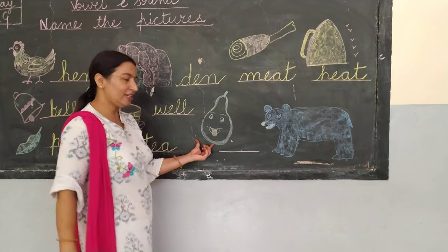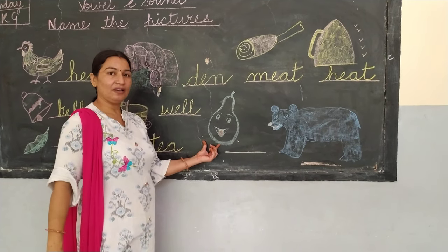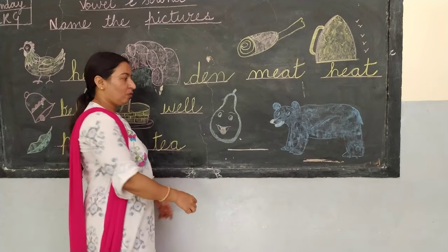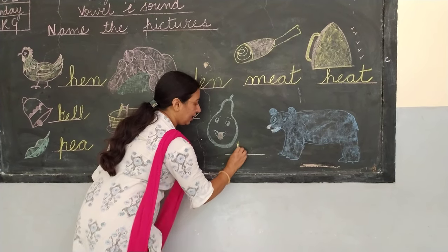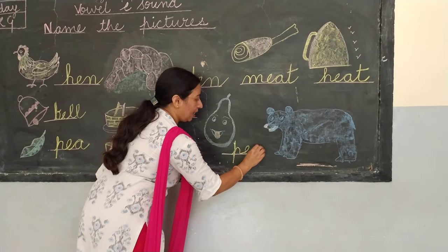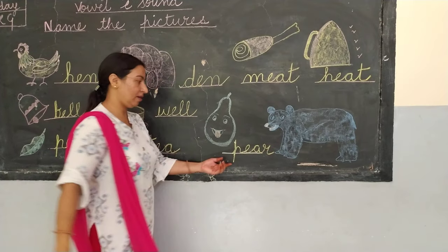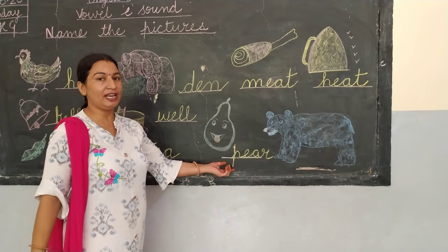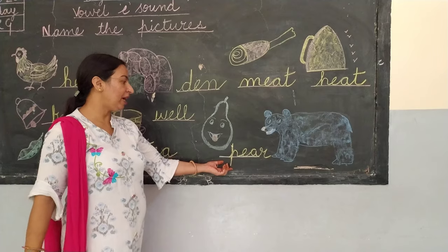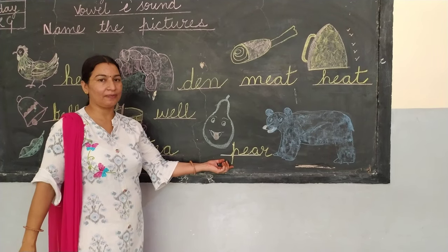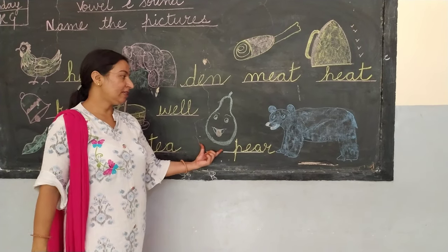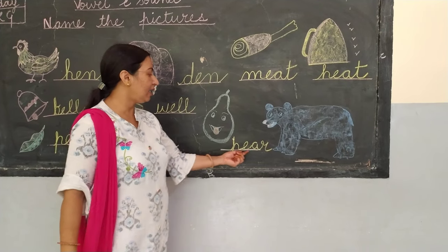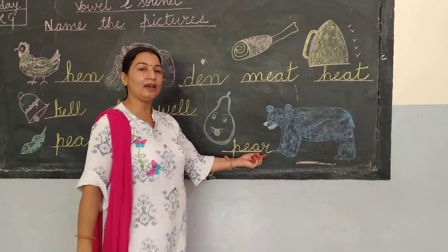Now what is this? It is a smiling face — which fruit is it? Pear. P-E-A-R, pear. Now this is the season of pear and these days you are getting a lot of pears. The spelling is P-E-A-R, pear.